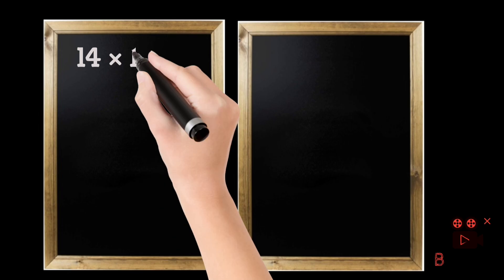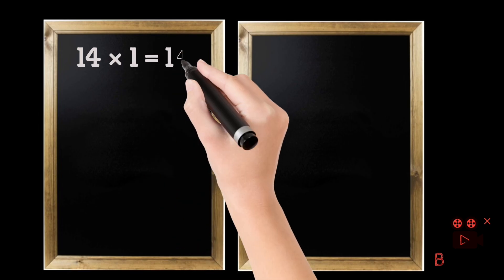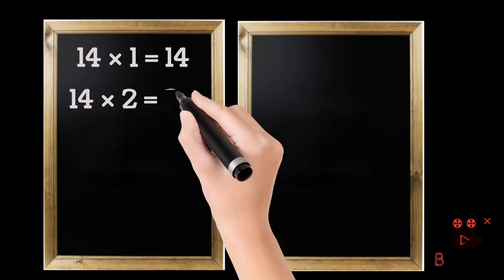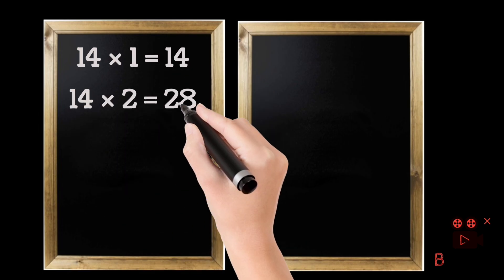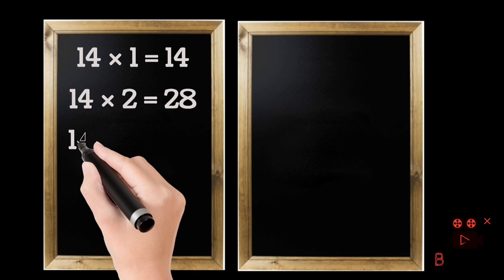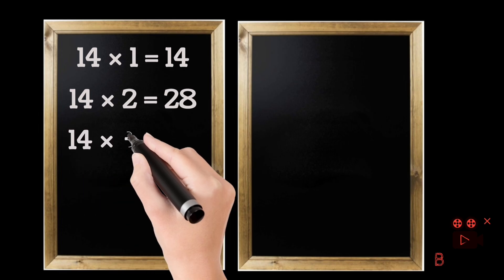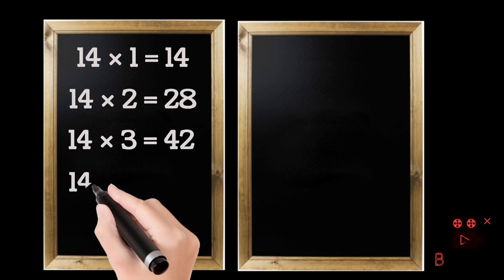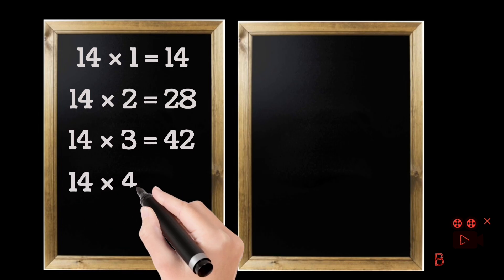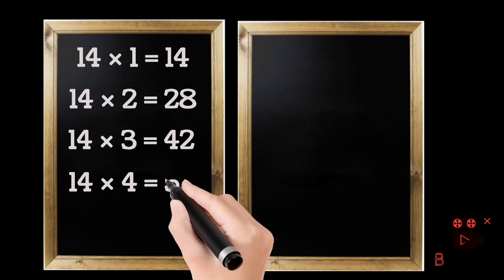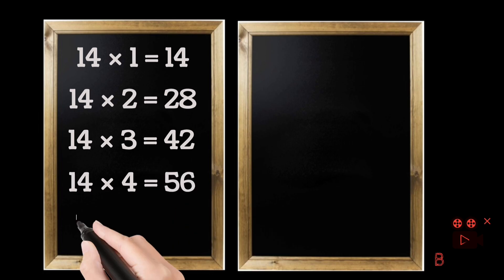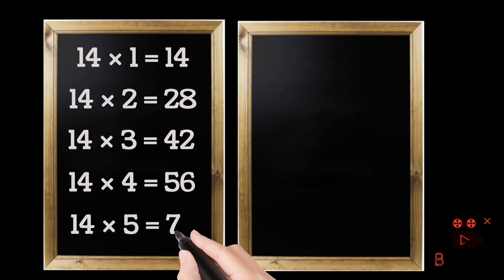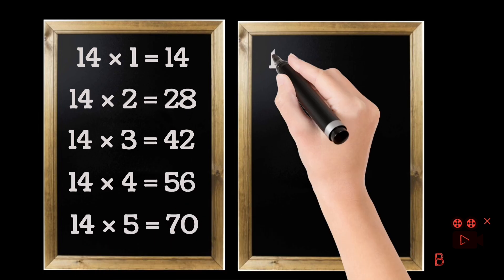14 ones are 14. 14 twos are 28. 14 threes are 42. 14 fours are 56. 14 fives are 70.